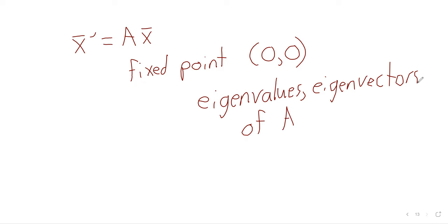So the derivative at the origin is always zero. We're going to go through a checklist — it's kind of a lot because there are terms you have to memorize — but the stability and type of this fixed point are controlled entirely by the eigenvalues and eigenvectors of the matrix A. If you just find the eigenvalues and eigenvectors, you know whether this fixed point is stable, unstable, or whatever it is, and you know the type of the fixed point.